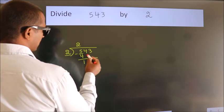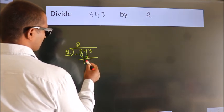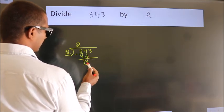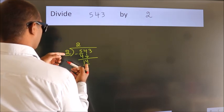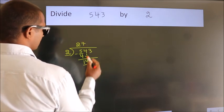After this, bring down the beside number. So 4 down. So 14. When do we get 14 in 2 table? 2 times 7, 14.